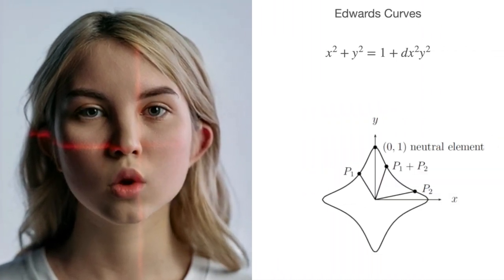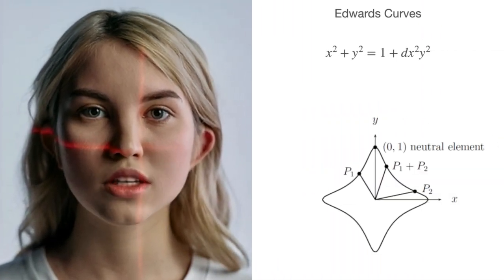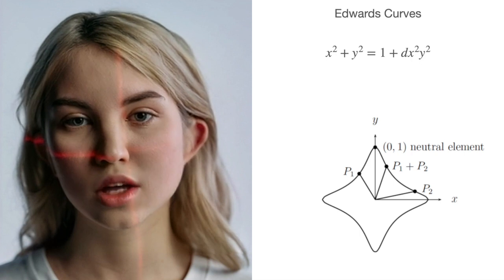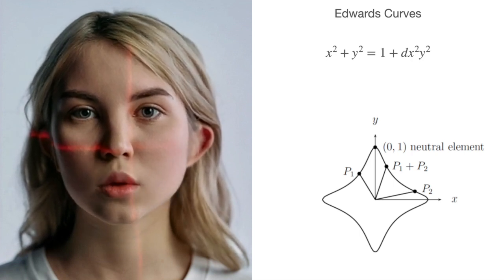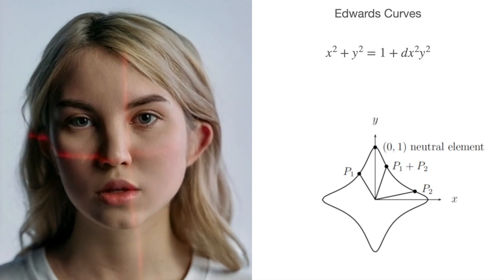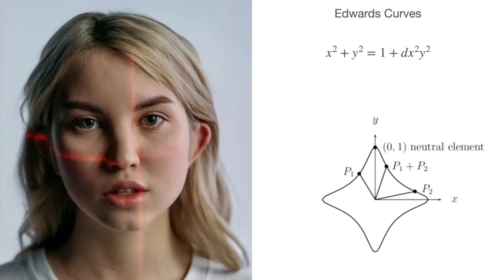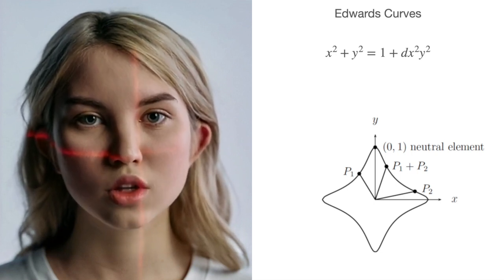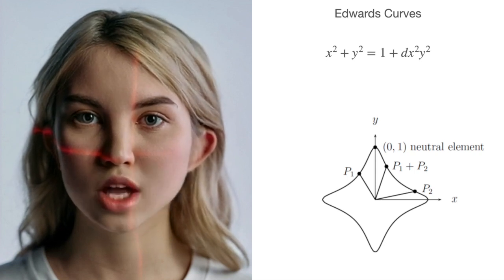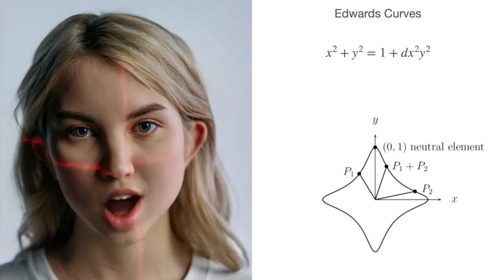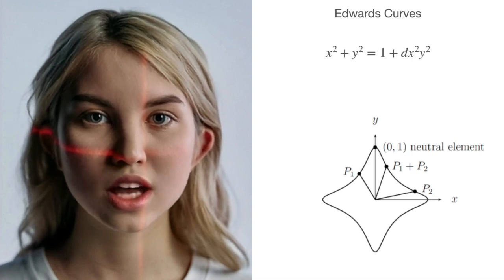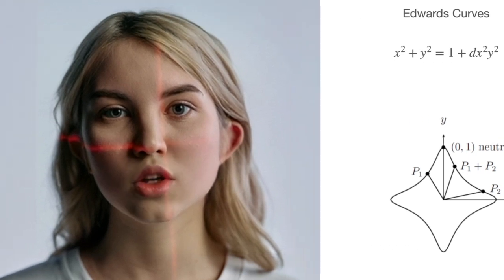On the other hand, Edwards curves are a little bit different than Weierstrass. In these curves, the point (0, 1) is used as the neutral element or identity element instead of the point at infinity. The graph of an Edwards curve doesn't appear to go off to infinity in the same way that a Weierstrass curve does, because Edwards curves are often represented using a projection that maps the curve onto a finite space. That is why we call it the neutral element or identity element instead of the infinite point in Edwards curves.